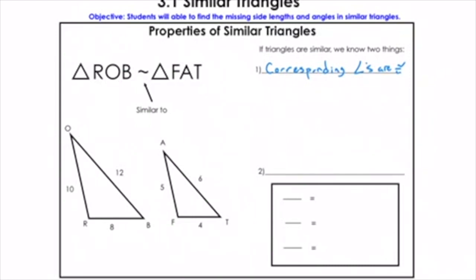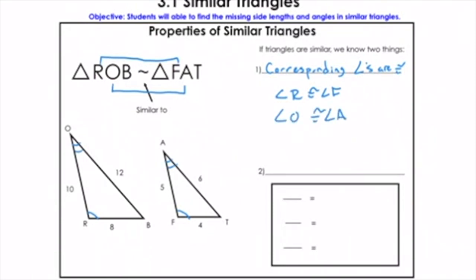Corresponding angles are the angles that match onto each other. So for example, R matches onto F — and remember, the order of these letters matters. So we know R is congruent to F; they are exactly the same if these two triangles are similar. Angle R is congruent to angle F. We also know that O is congruent to A — those correspond to each other — so angle O is congruent to angle A. And finally, angle B is congruent to angle T.